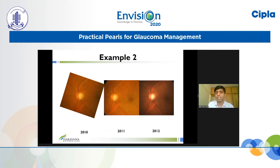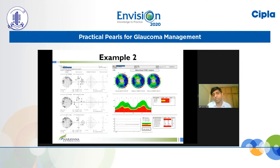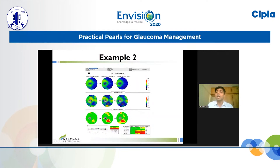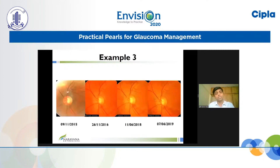In contrast, in this example the disc shows an inferior notch and a superior RNFL defect, making it very difficult to analyze change with disc photographs. Visual fields remain stable and RNFL thickness also remains quite stable over three time points. However, the GCC maps show enlargement in the zone of GCC thinning. So in this example, the GCC maps show possible progression while the visual fields and RNFL maps don't agree.